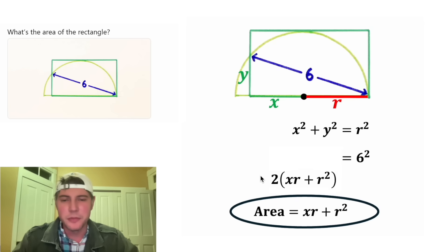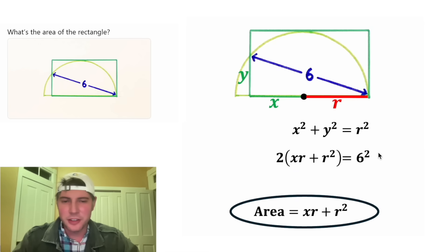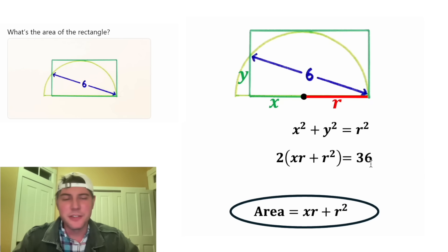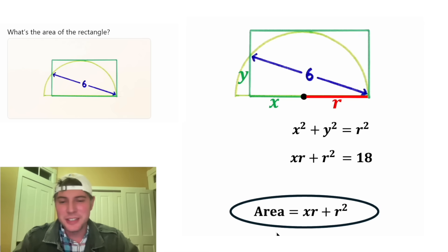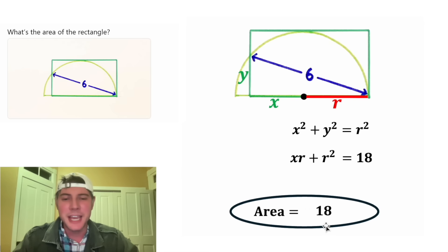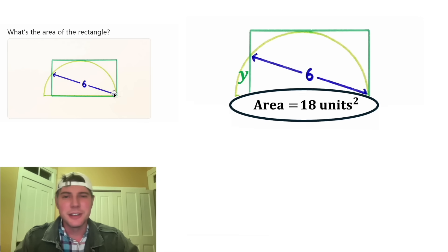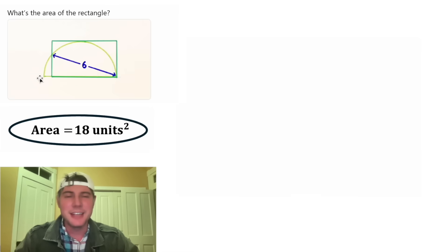On the right-hand side, 6 squared equals 36. Now both sides can be divided by 2 — on the left, the 2s cancel, and on the right, 36 divided by 2 is 18. So we have XR plus R squared equals 18. But that's the same as our area expression XR plus R squared. So substituting in, the area equals 18 units squared. That's the answer to our question: the area of this rectangle is 18 units squared.